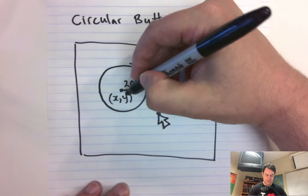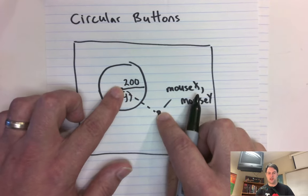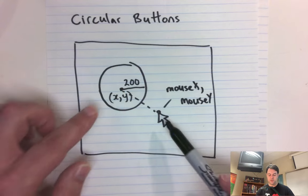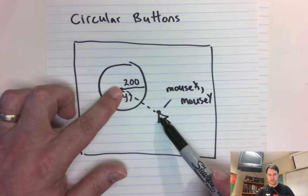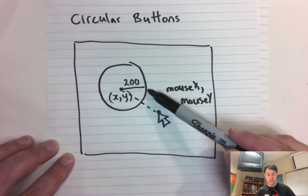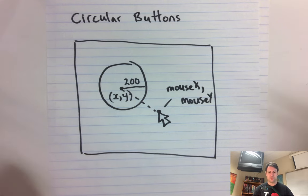And what we can do is we can calculate the distance, this distance, and we can compare it to the radius of our button. So if the distance from the center of the button to the mouse pointer is less than the radius, well, our mouse pointer is inside of the button. So how do we code that?